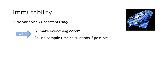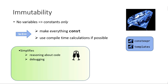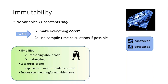This can easily be achieved in C++. We just use const for every variable declaration. And if you want to be really sure, then we can also use compile-time calculations. The benefits are well known. First of all, it simplifies reasoning about the code and debugging. Then it also reduces the risk of introducing errors, because we cannot accidentally override values. And then it also encourages meaningful variable names. A special benefit in C++ is that the compiler can perform optimizations.